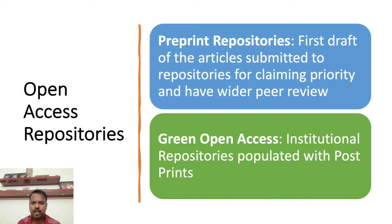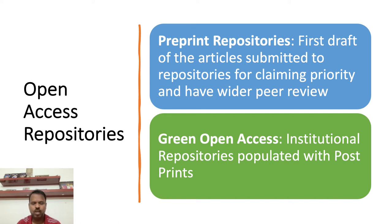Once the comments are incorporated and finalized, that is the post-print. It then goes to typesetting and is published as the publisher's version. If you pay article processing charges, there are no copyright issues — the authors retain rights. But if you are not paying APCs under the green open access route, you sign a copyright agreement and ask the publisher to permit deposit in an institutional repository. CSIR and ICIR have their own policies in India, and the government of India's Science Technology Innovation Policy 2020 (still in draft) also addresses this green route.